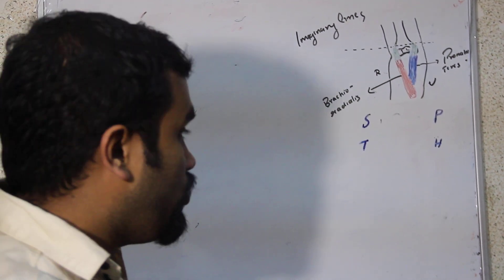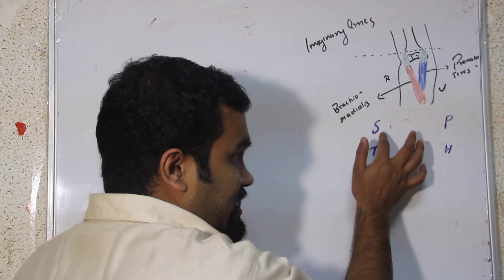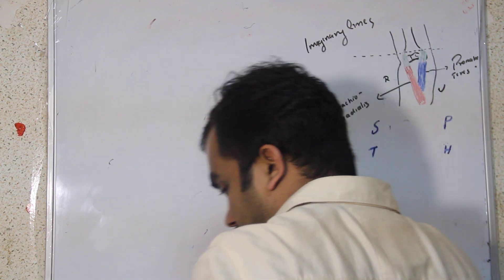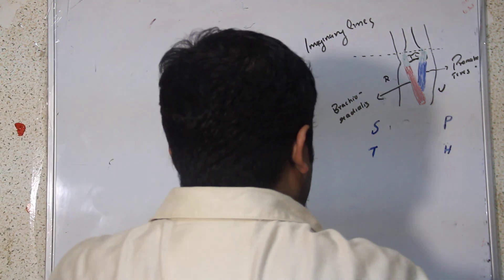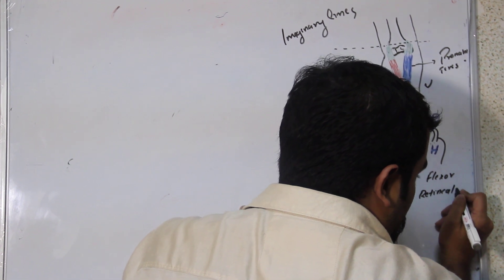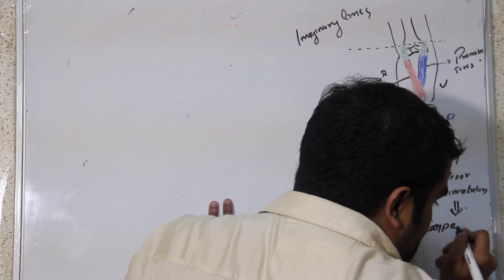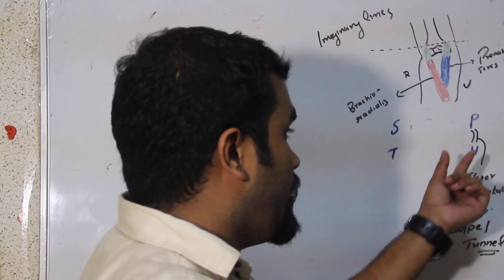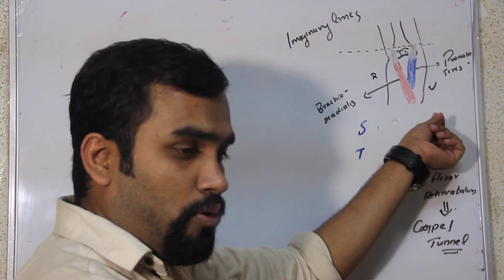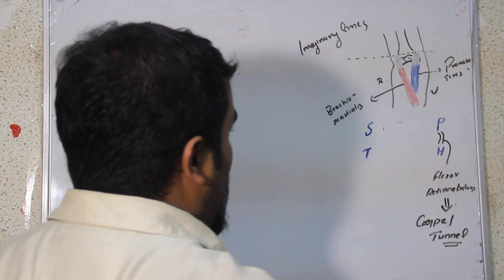Now, reviewing the carpal bones: in the proximal row we have scaphoid, lunate, triquetrum, and pisiform; in the distal row we have trapezium, trapezoid, capitate, and hamate. The pisiform and hamate are connected and they form the flexor retinaculum. Many structures pass through this, forming the important structure known as the carpal tunnel.